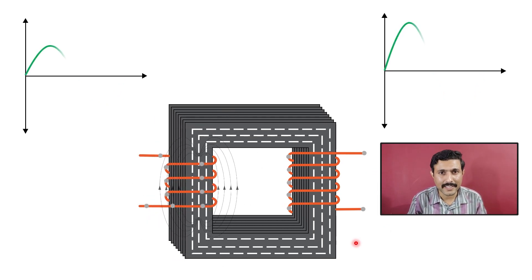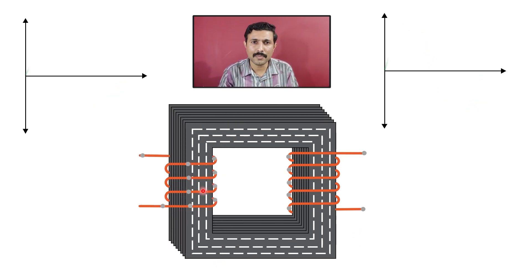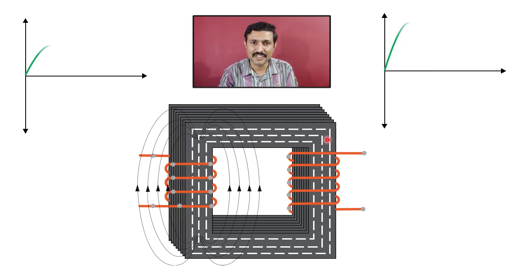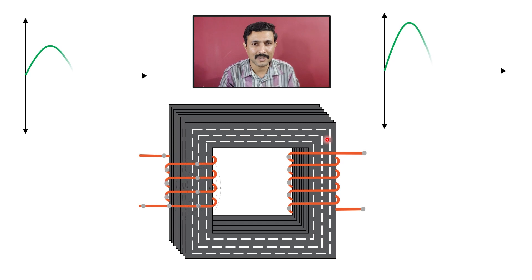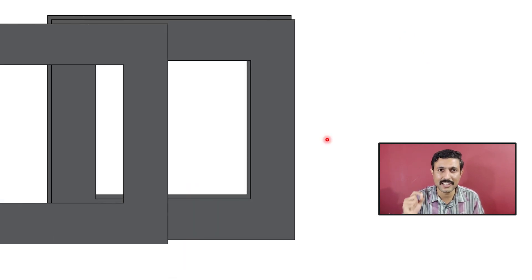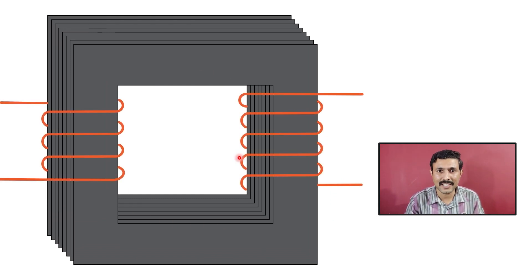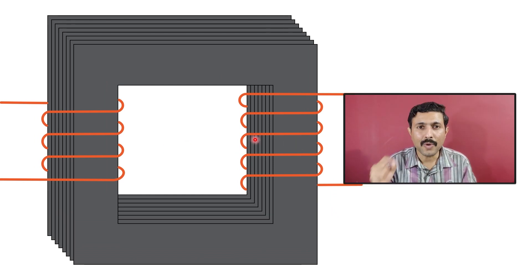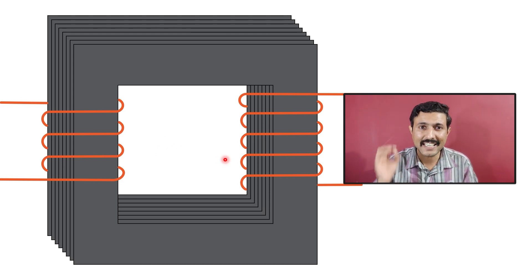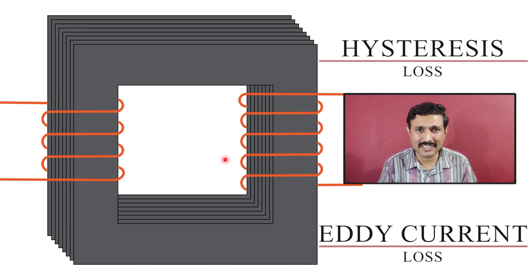EMF is induced not only in the winding but also in the core, which causes power losses in the core. To avoid those power losses, the core material is chosen appropriately. Generally, silicon steel is used as the core material. Thin laminated sheets of silicon steel are stacked together to create the core, and then winding is wound on both the primary and secondary sides. The reasons behind these choices relate to hysteresis loss and eddy current loss.